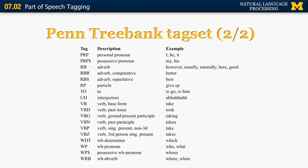A few more Penn Treebank tagset examples: RB is used for an adverb; VB is used for the base form of the verb. Other verb forms include VBD for past tense — not necessarily an '-ed' form, so irregular verbs like 'take' have 'took' as past tense, still labeled VBD. VBG is a gerund or present participle, typically an '-ing' form. VBN is the past participle, normally an '-ed' form, but for irregular verbs like 'take' it's 'taken.' VBP is used for the non-third-person singular present, like 'take.'